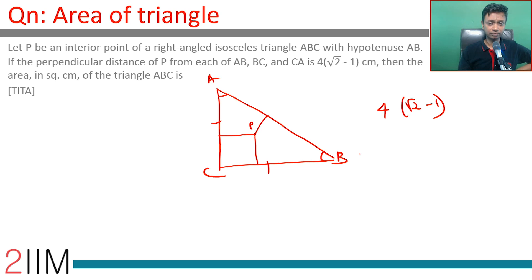That means P is the incenter when the sides are in the ratio 1:1:√2. I'm going to call it a, a, a√2. Since all three distances are equal, we're effectively talking about P being the incenter of a right isosceles triangle whose inradius is 4(√2 - 1).